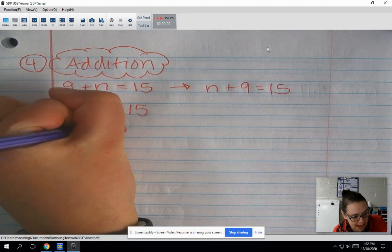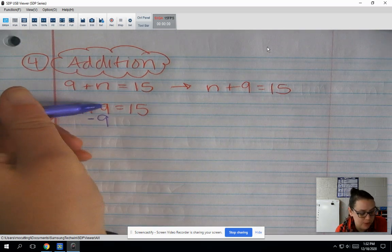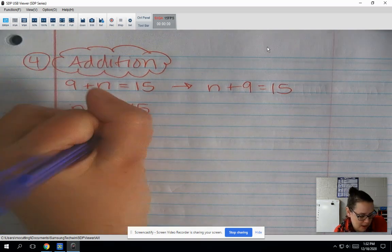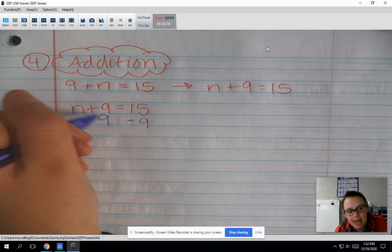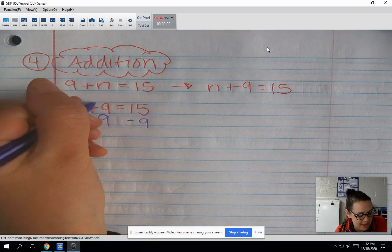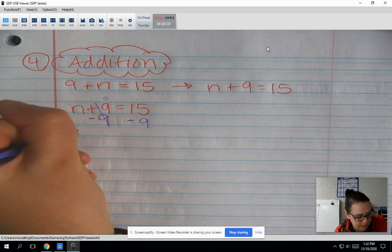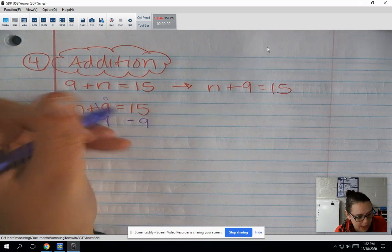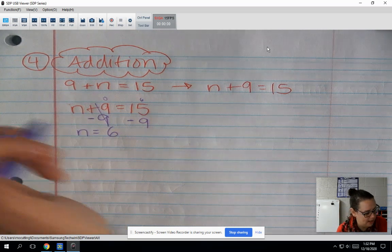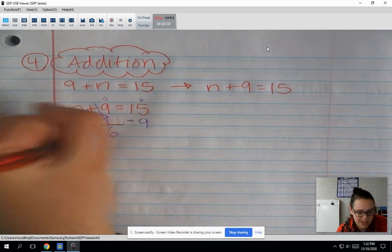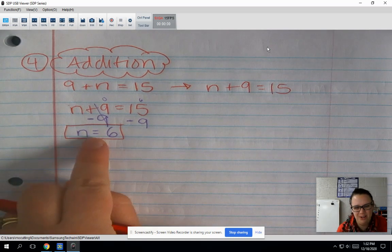We need to subtract that 9 from both sides. So minus 9. And when I say both sides, I mean both sides of my equal sign. Minus 9. So n, if I add 9 and then take that 9 away, that just gives me 0. So I'm left on the left side with just n. And then 15 minus 9 gives me 6. So n equals 6. Messed up my color scheme again. That's supposed to be back in red.